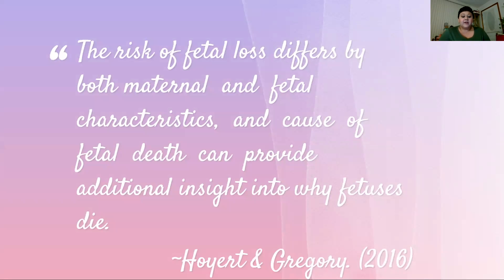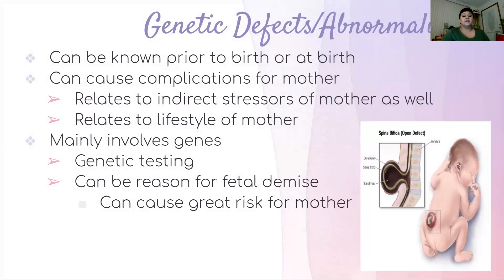Some genetic defects and abnormalities can be known prior to birth or right at birth, and these complications can cause issues for the mother. This can all be related to indirect stressors of the mother as well as lifestyle. Some indirect stressors are things the mother can't control, such as age, race, sex — for example if a mom is transgender — her past medical history, prior pregnancies, and her lifestyle, including her health, diet, BMI, or whether she has had prior terminations or abortions, which can also affect future pregnancies.